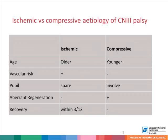It is important to distinguish between an ischemic and a compressive third cranial nerve palsy because of the prognosis and the sinister nature of a compressive lesion, which may be life-threatening. Classically, patients with ischemic third nerve palsies are older, have multiple vascular risk factors, the pupil is usually spared, there should be no signs of aberrant regeneration, and these palsies usually recover within about three months. Compressive third nerve palsy occurs in younger patients without vascular risk factors, the pupil is usually involved, they may have signs of aberrant regeneration, and they usually do not demonstrate recovery with time.